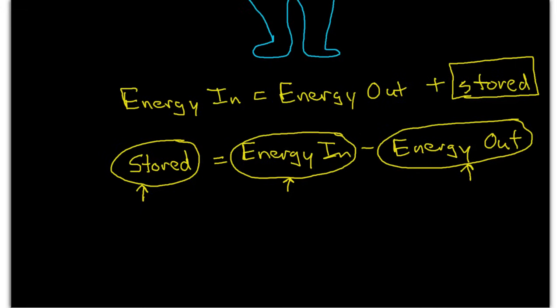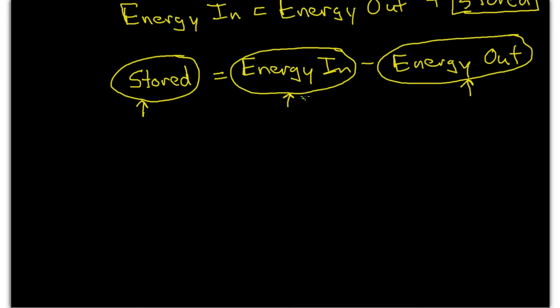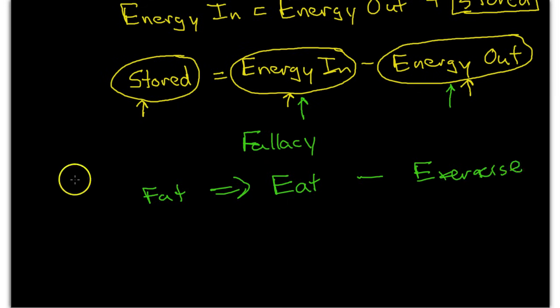Now a lot of people make the assumption that we have conscious control over all aspects of the energy we take in and the energy that we use. We make a common fallacy which states that the amount of fat we have is a function solely of eating and exercising. If you want to lose fat or lose weight you need to eat less and exercise more. But this is a fallacy because it assumes we have conscious control over energy in and energy out, when in fact we actually have limited control over different aspects of this equation.